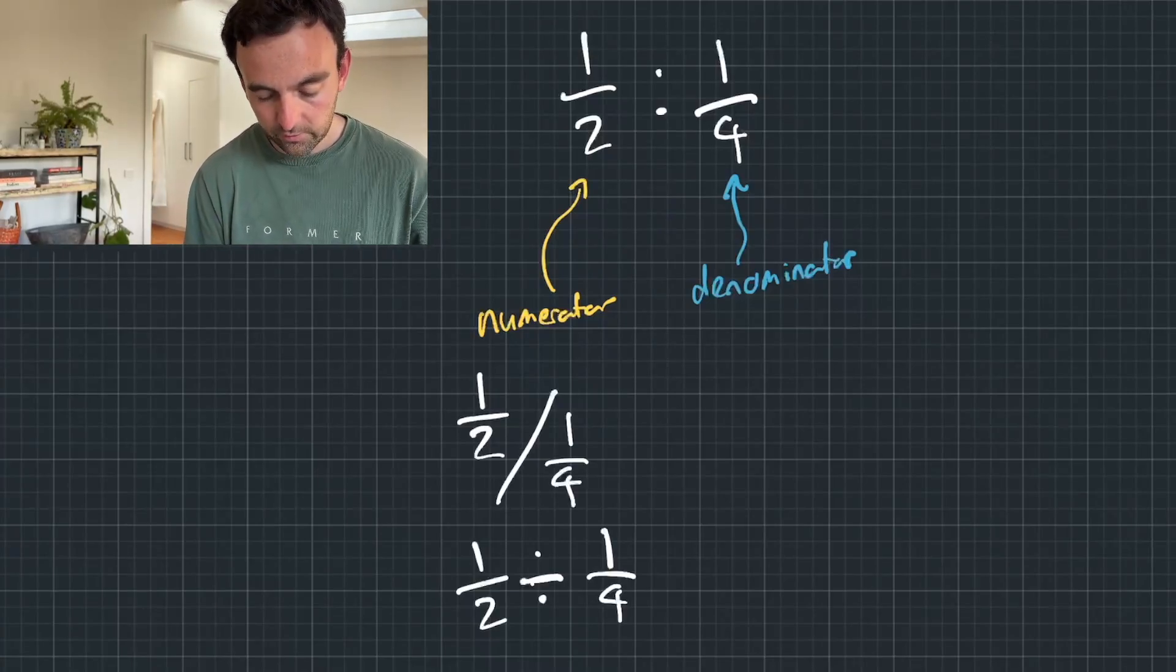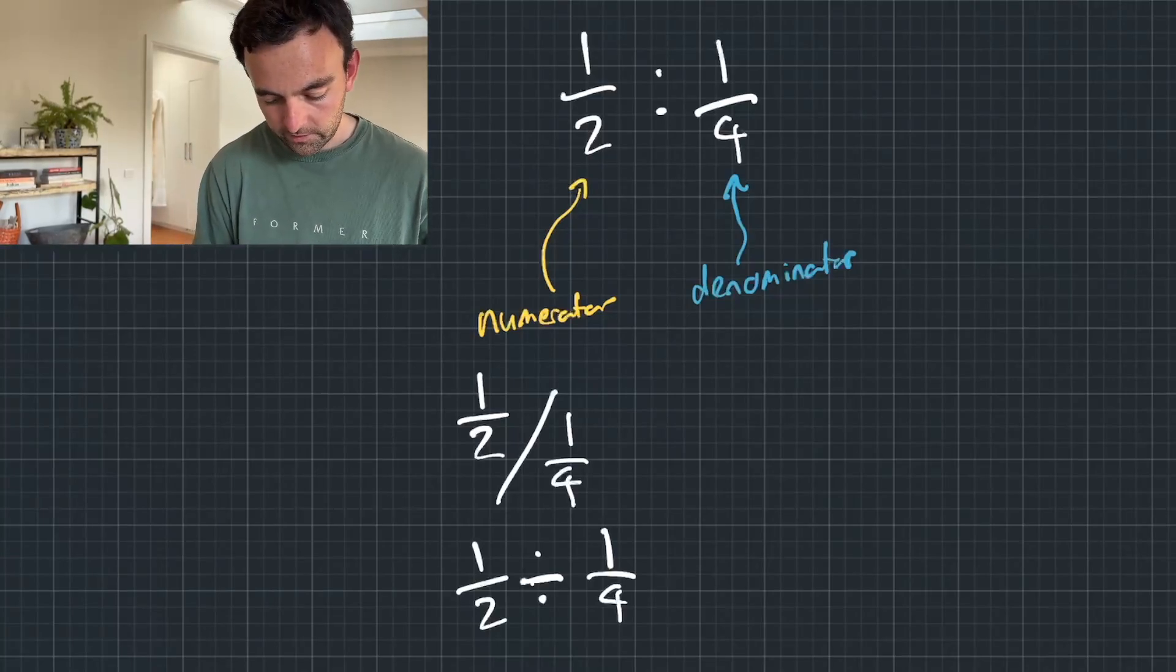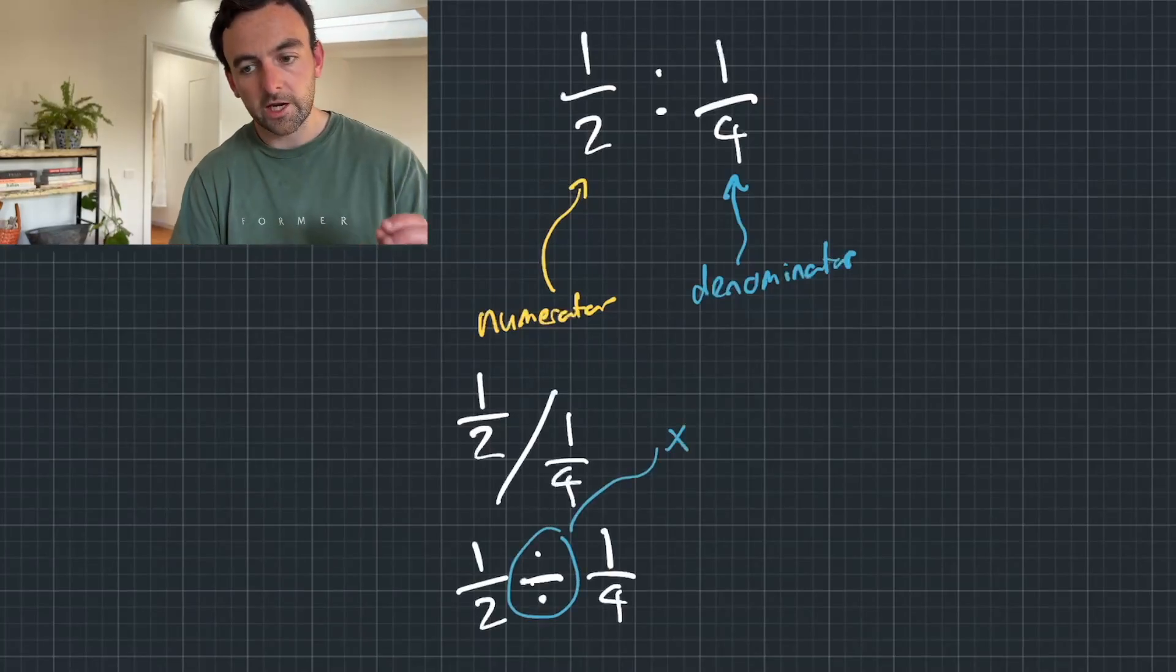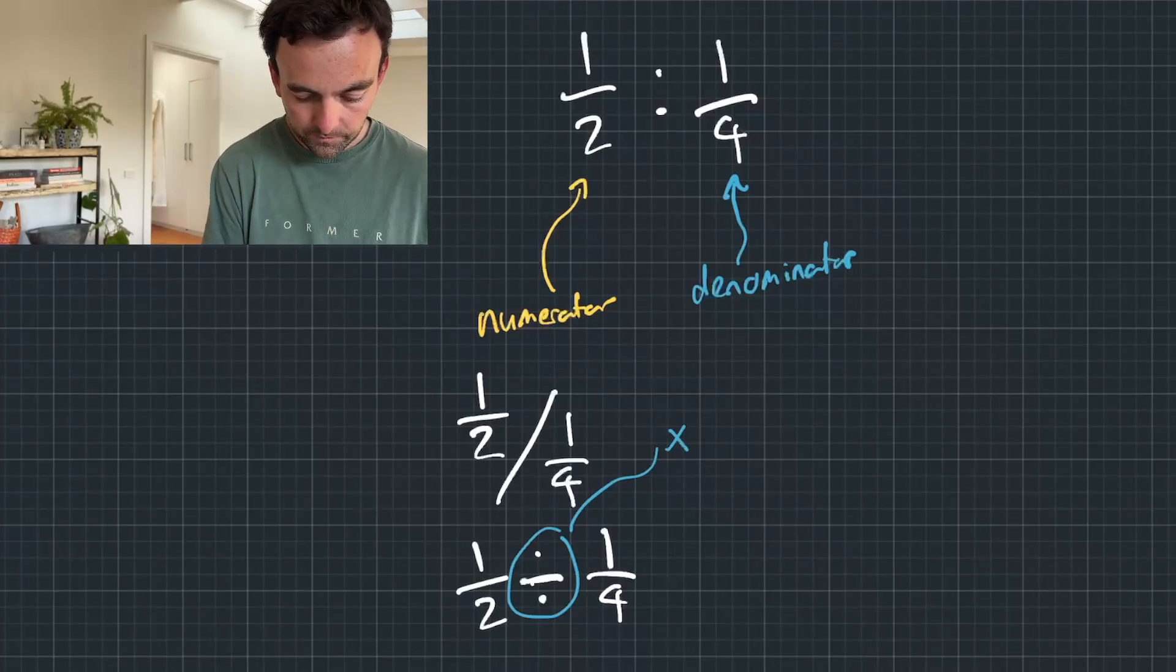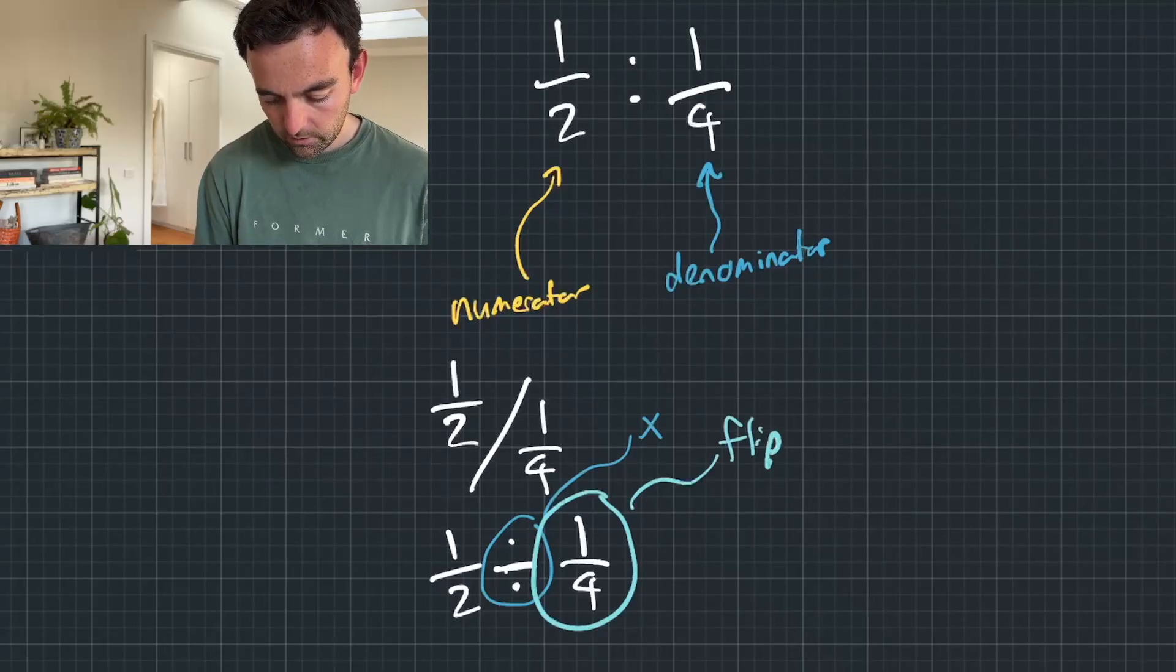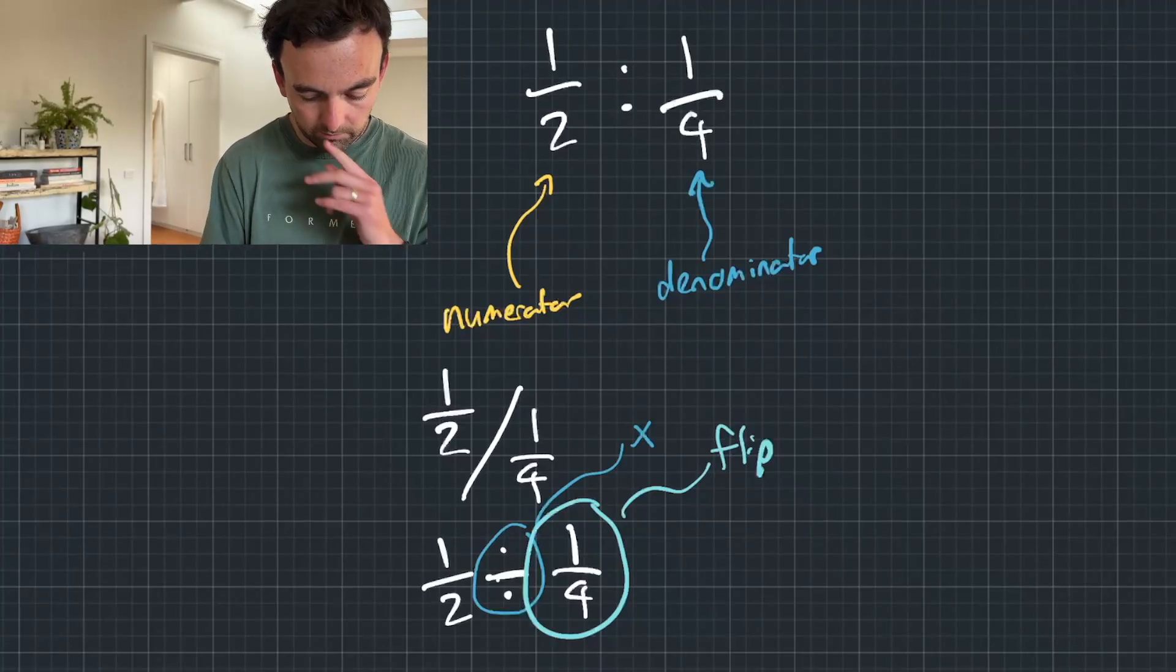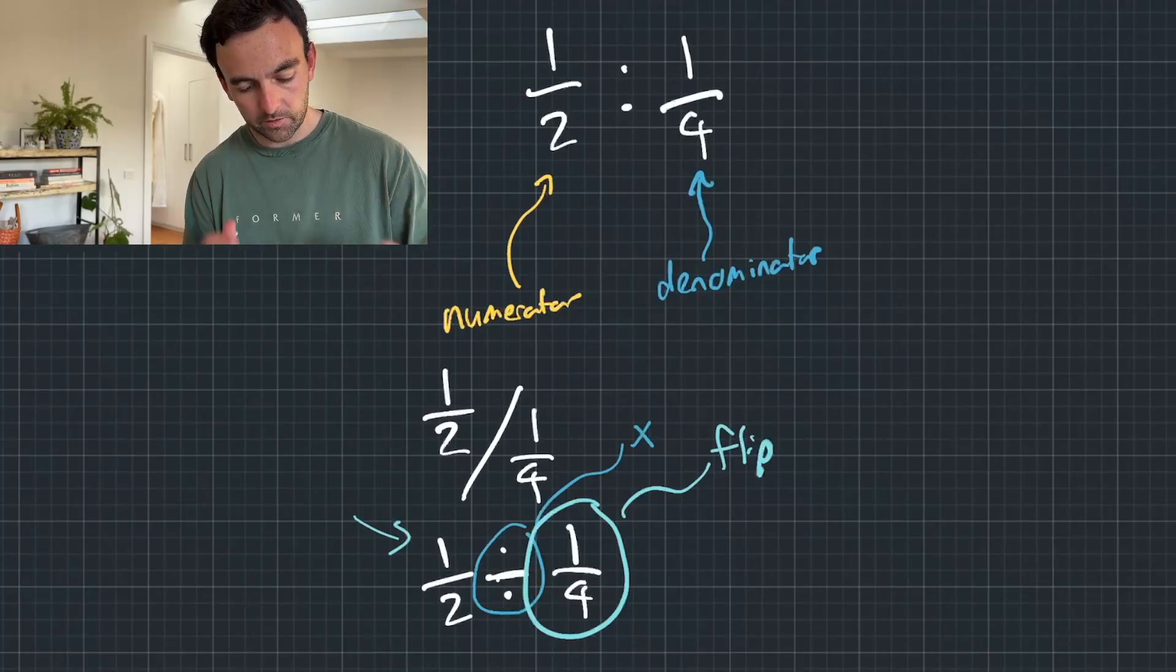There's this rule in math called the reciprocal law. So what that means is we can change a divide sign to a multiply if we flip the fraction on the right. Now, it has to be the one on the right. It can't be the one on the left. And that's why you need to write it out in this order with that divide sign because the order is important.